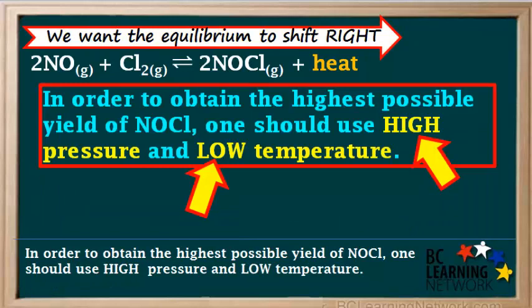Now we can summarize the effects of pressure and temperature and state that in order to obtain the highest possible yield of NOCl using this reaction, one should use high pressure and low temperature.